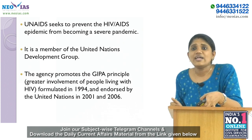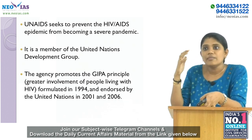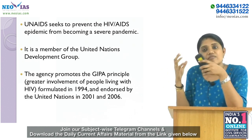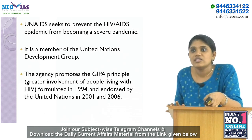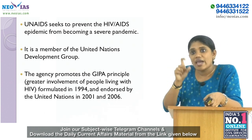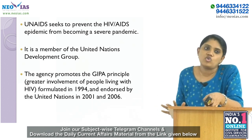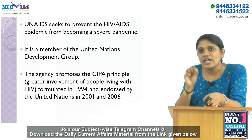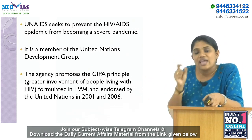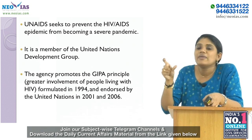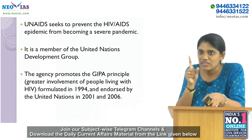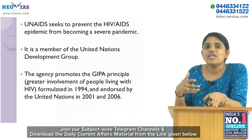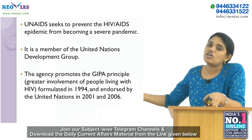UNAIDS seeks to prevent the HIV/AIDS epidemic from becoming a severe pandemic. It is headquartered in Geneva, Switzerland, and is a member of the United Nations Development Group. The agency promotes the GIPA principle — Greater Involvement of People Living with HIV — formulated in 1994 and endorsed by the United Nations in 2001 and 2006.